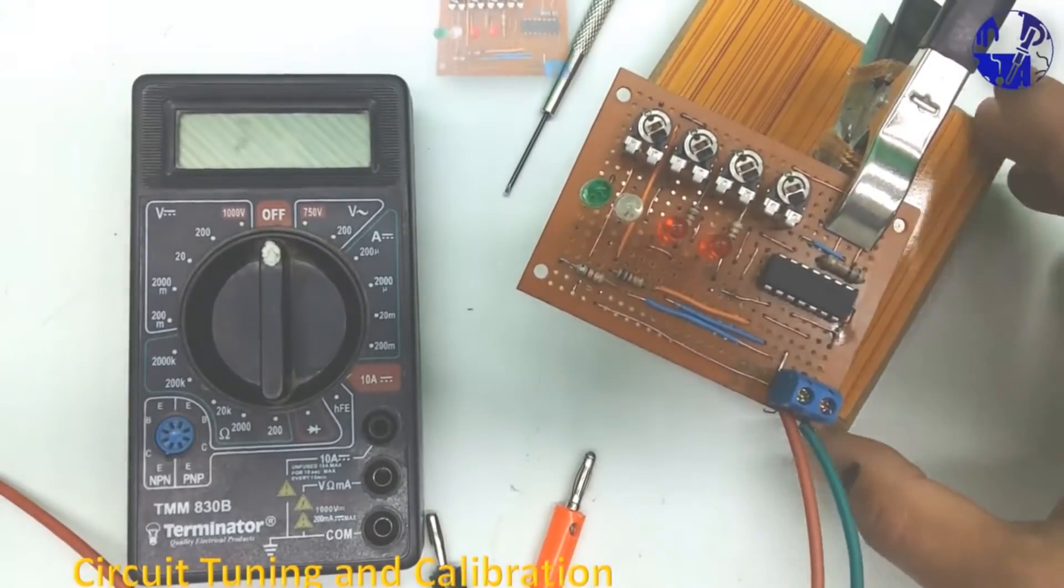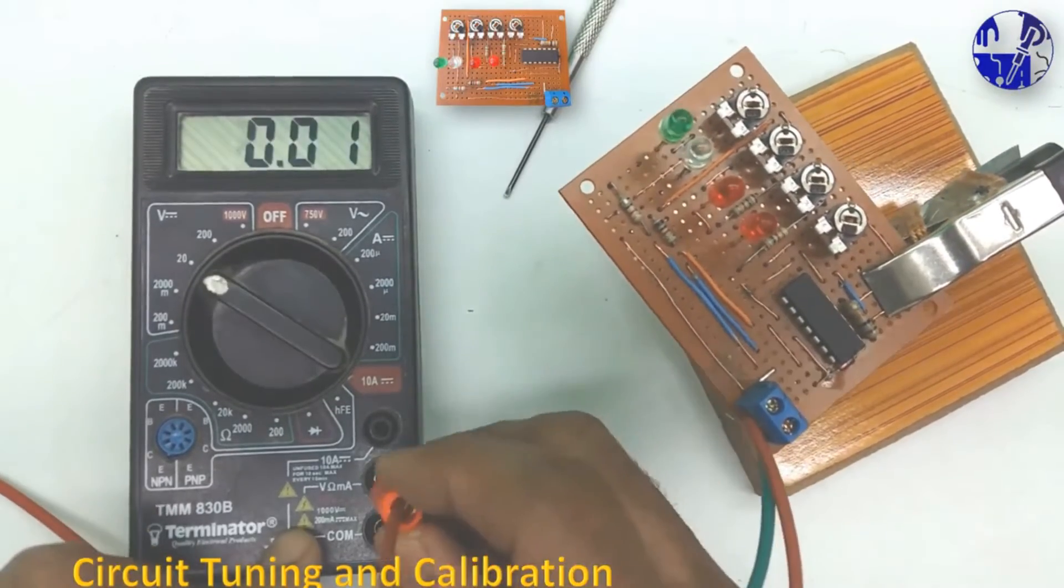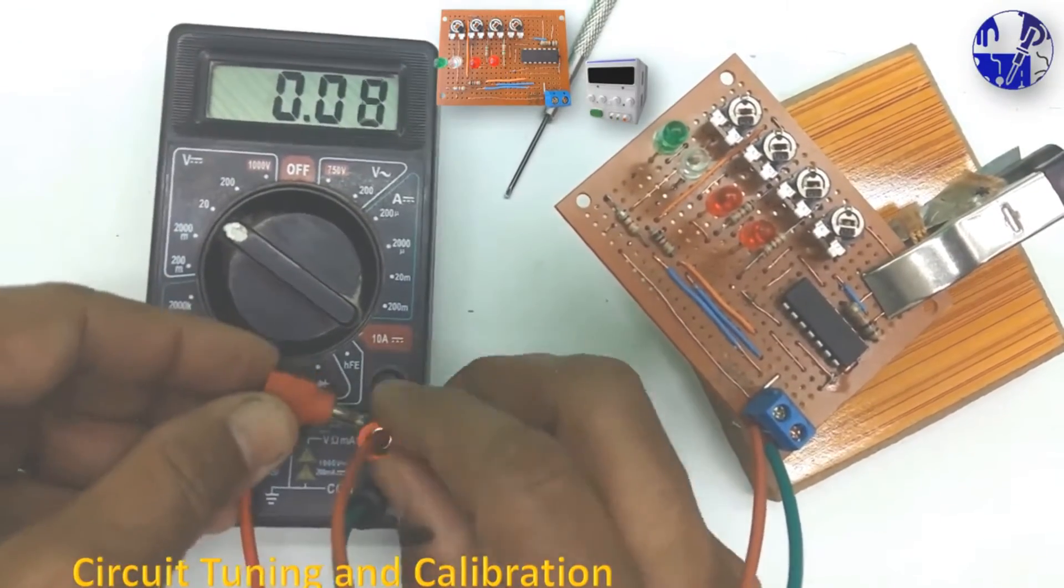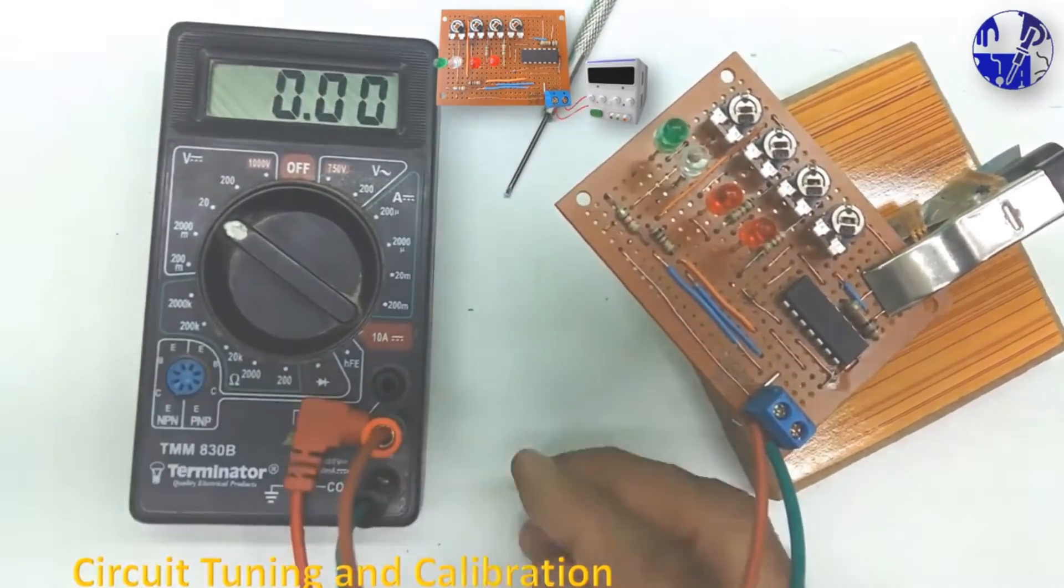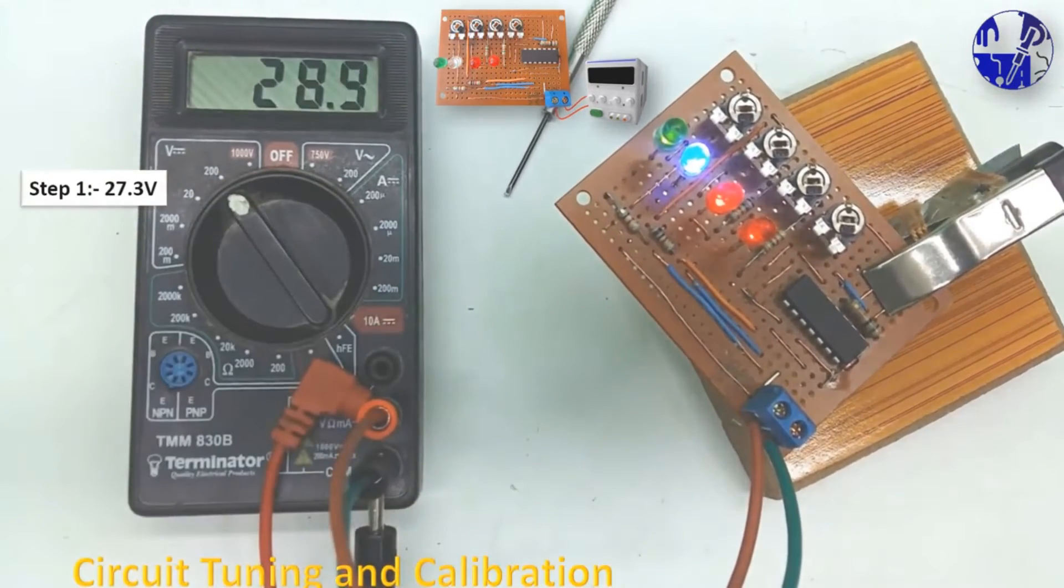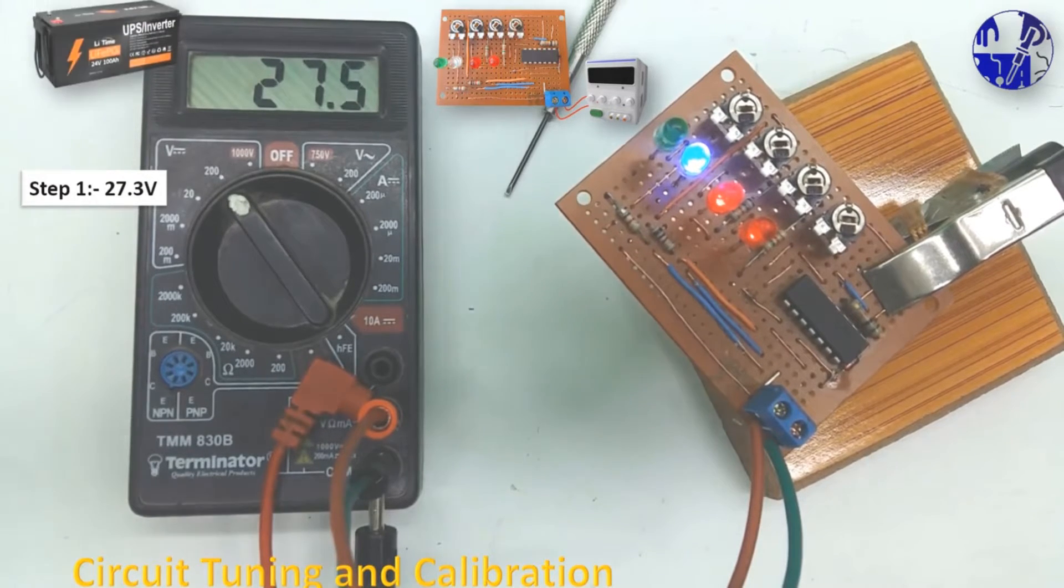Now it is time to calibrate the battery level indicator after installing all components on the Vero board. Ensure each LED accurately indicates the battery voltage level. Connect the variable power supply to the circuit and adjust the voltage to approximately 27.3V. This time, we will calibrate the circuit for a 24V battery. Follow the steps indicated on the screen.